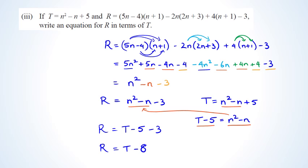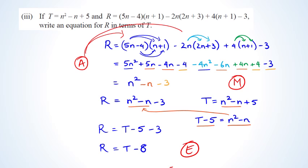In terms of grades, getting r equals t minus 8 is excellence. Fully simplified to r equals n squared minus n minus 3 is a merit. Getting one of the bracket expansions correct is an achieved.